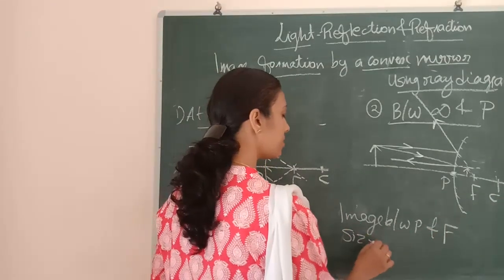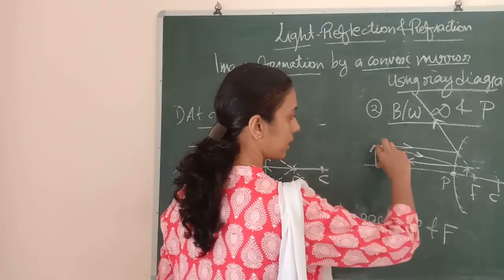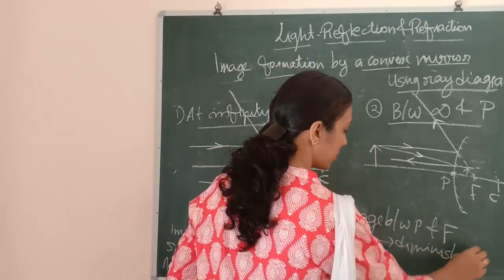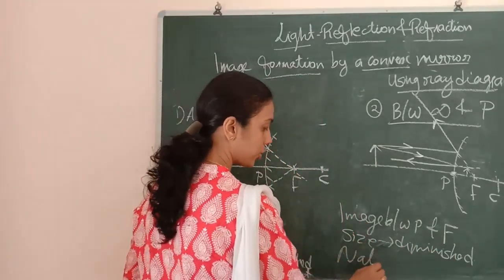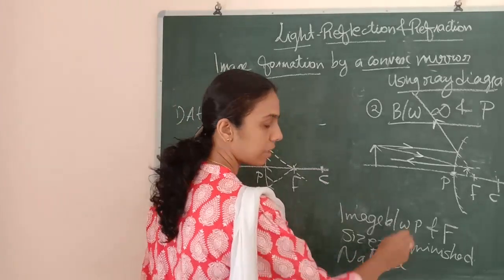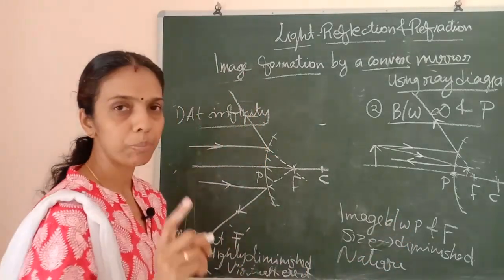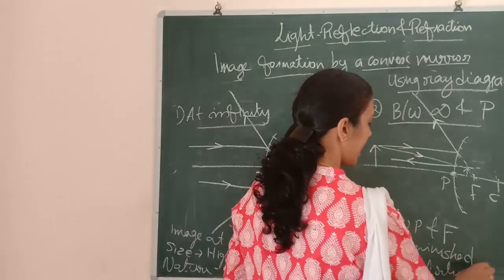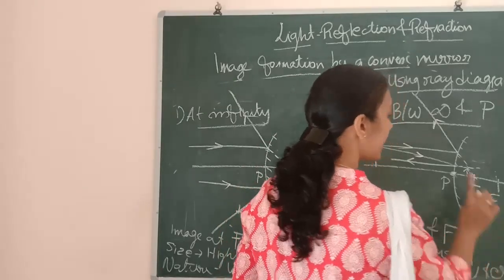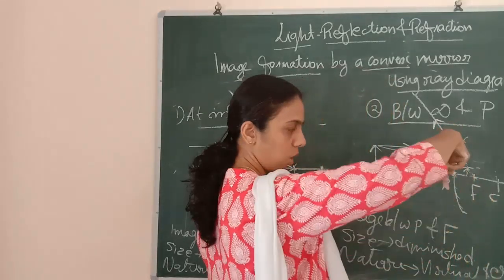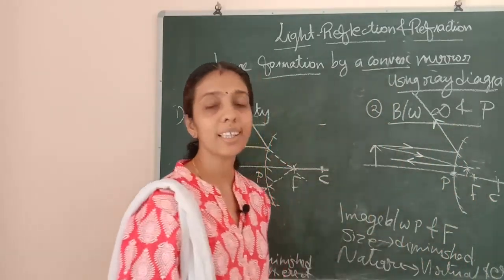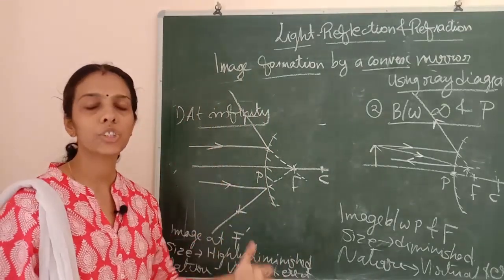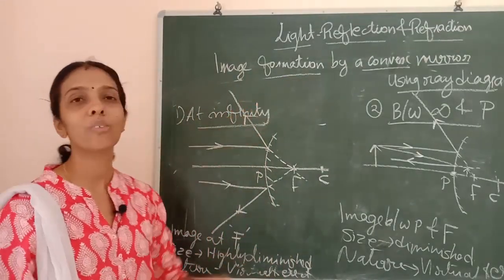What is the size of the image? The object is of one size and the image is smaller, so it will be a diminished image. And what is the nature? The rays are not actually meeting, so the image is virtual and erect. Virtual means erect — it is not inverted, it is straight. So the image is virtual and erect. That is how we find the image using a convex mirror.